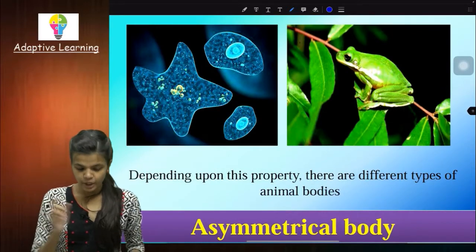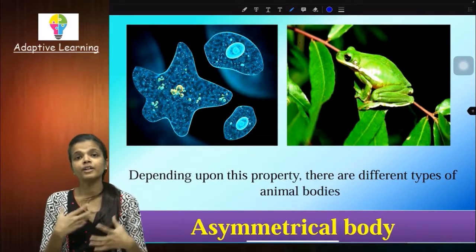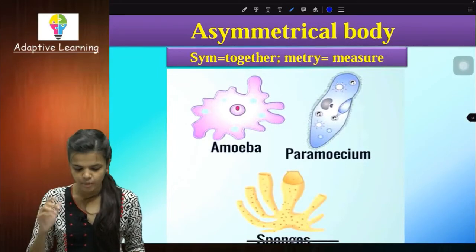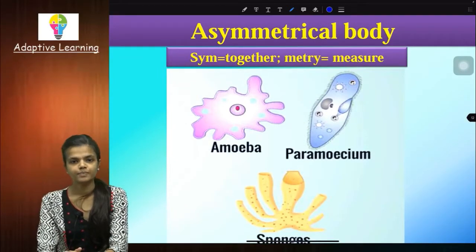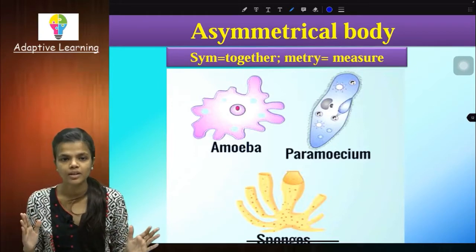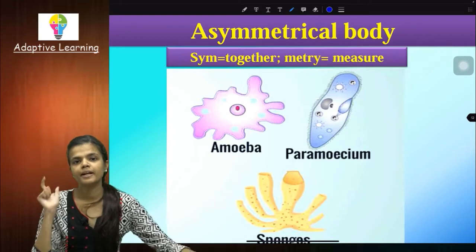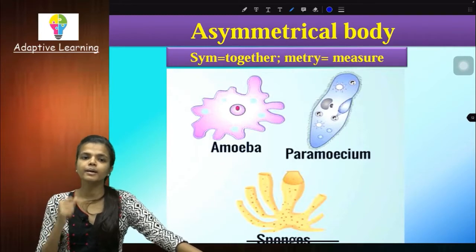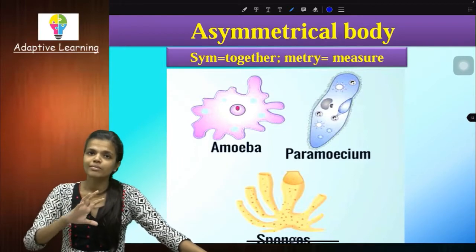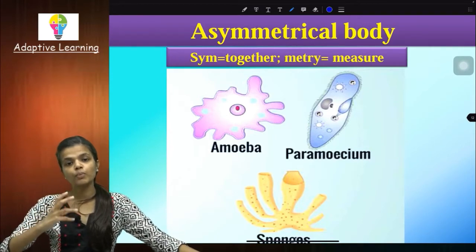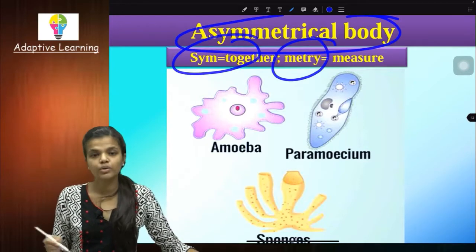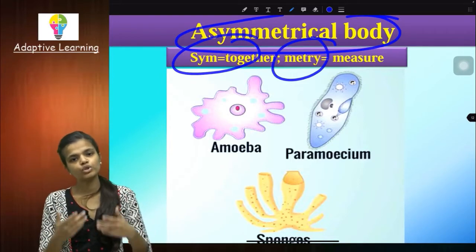So depending upon this property, there are different types of animal body symmetry. Asymmetrical body — 'sym' means together, 'metry' means measure. Amoeba, Paramecium, and sponge — cut them from anywhere, you will not get equal parts. That's why they come into the category of asymmetrical body. So when you write about Amoeba, you have to write that its body symmetry is asymmetrical. These things come when you study animal classification and the characteristics of each group.